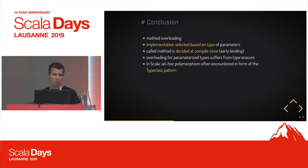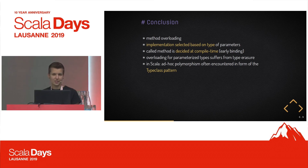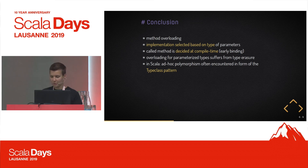To summarize: ad-hoc polymorphism is essentially method overloading. The implementation is selected based on the type and decided at compile time. On the JVM we have to watch out for type erasure. In Scala, a pattern often associated with ad-hoc polymorphism is the type class pattern, which we will look at after covering subtyping polymorphism first.